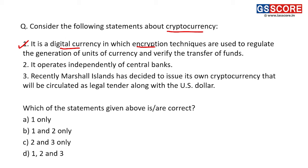Second statement: it operates independently from the central bank. This is the basic feature of cryptocurrencies — they do not have a regulator and therefore operate independently of the central bank. Second is correct. Third: recently Marshall Islands has decided to issue its own cryptocurrency that will be circulated as legal tender along with the US dollar. This is also correct — that cryptocurrency is called SOV, meaning Sovereign. All three statements are correct, and the answer is D — 1, 2 and 3.